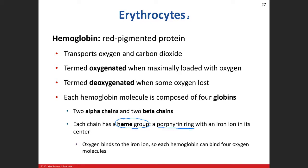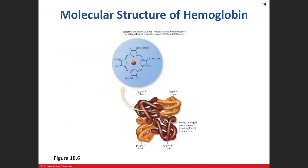In the heme group, there's a ring-like structure with iron at its center. Iron is what oxygen binds to. The body is always checking protein configuration as it makes these proteins — if a protein is folded wrong, it gets degraded. Proteosomes are the cell organelles that act as quality control, checking proteins and digesting incorrectly folded ones into individual amino acids for recycling.